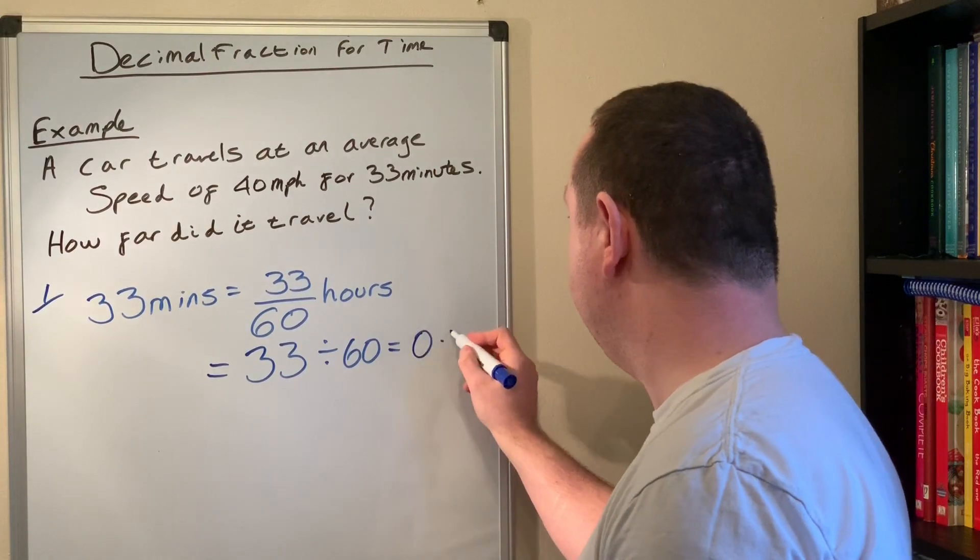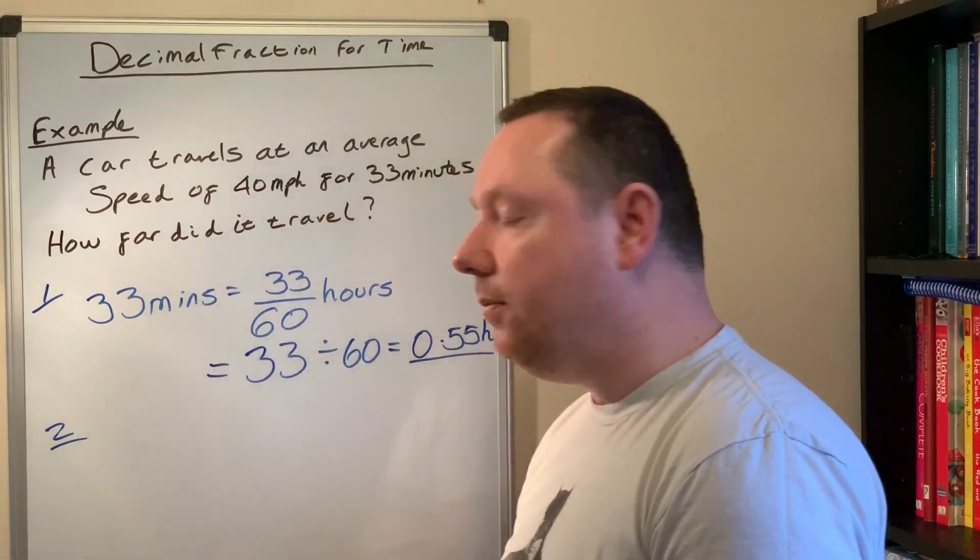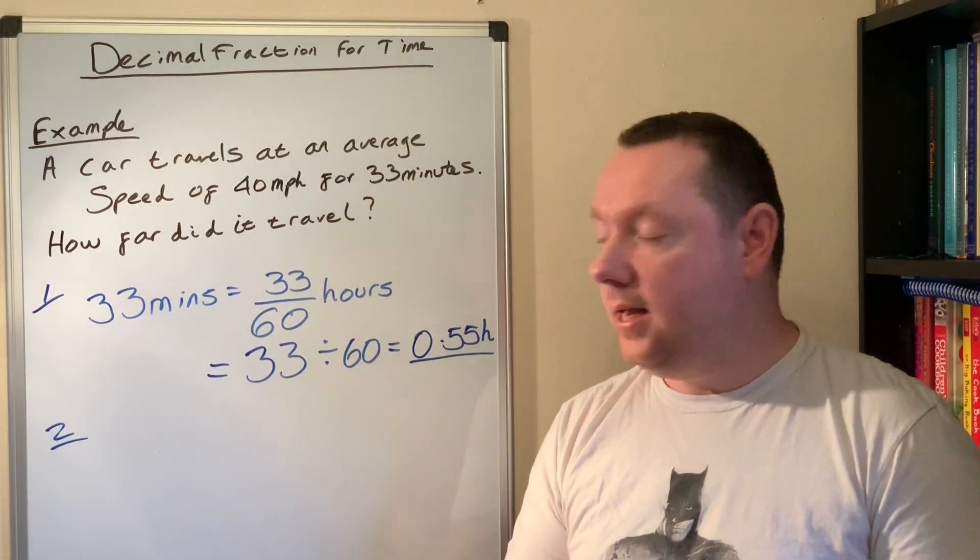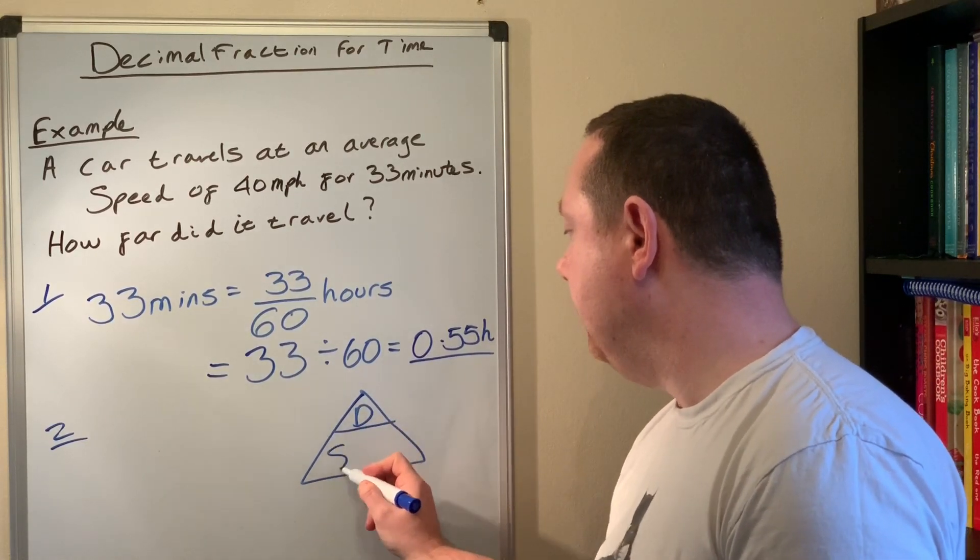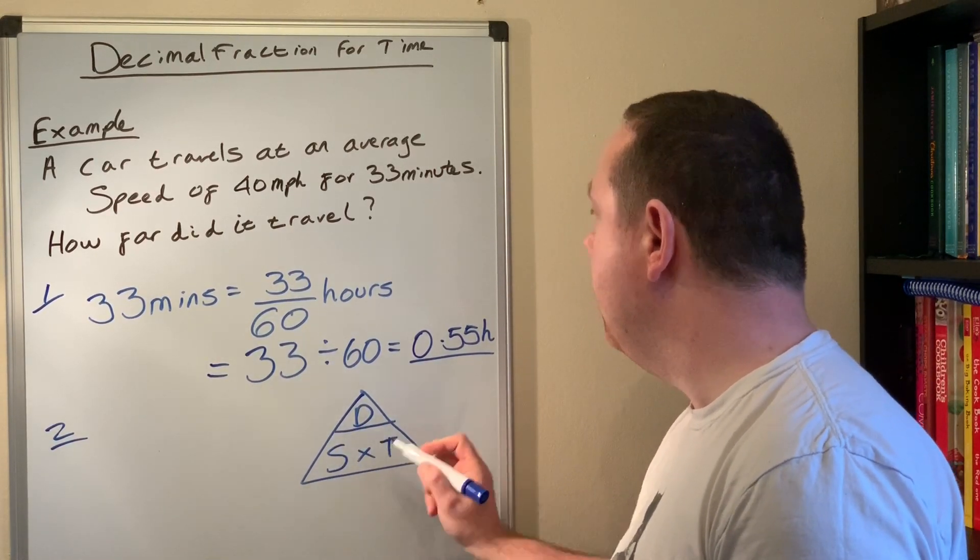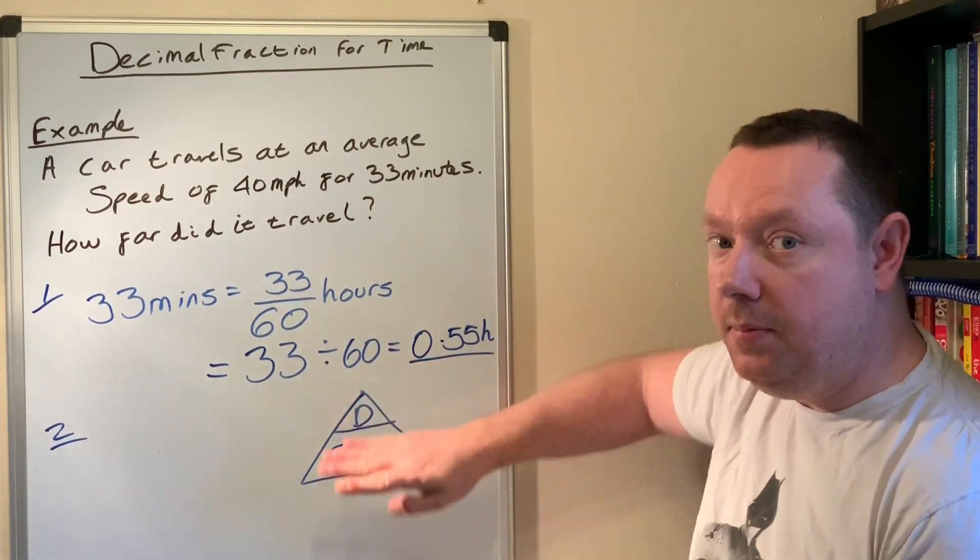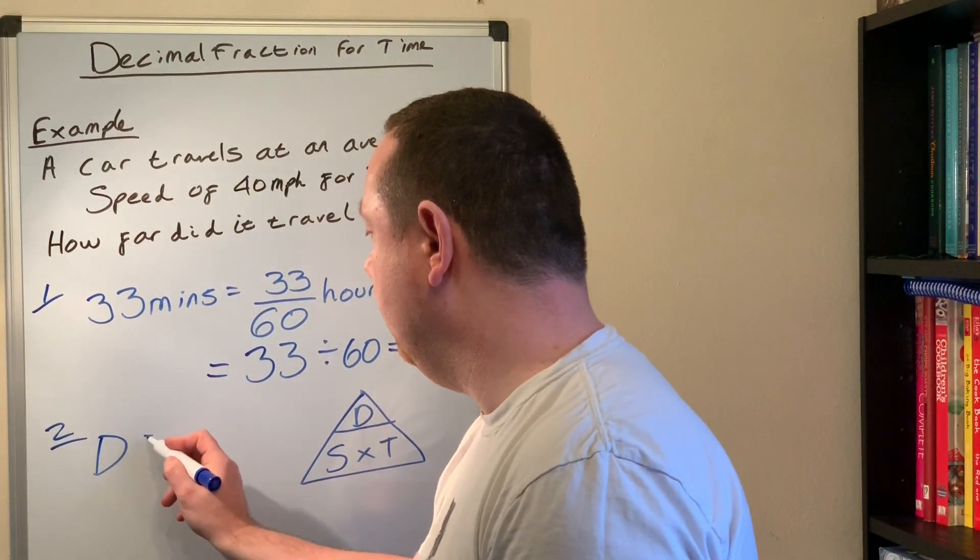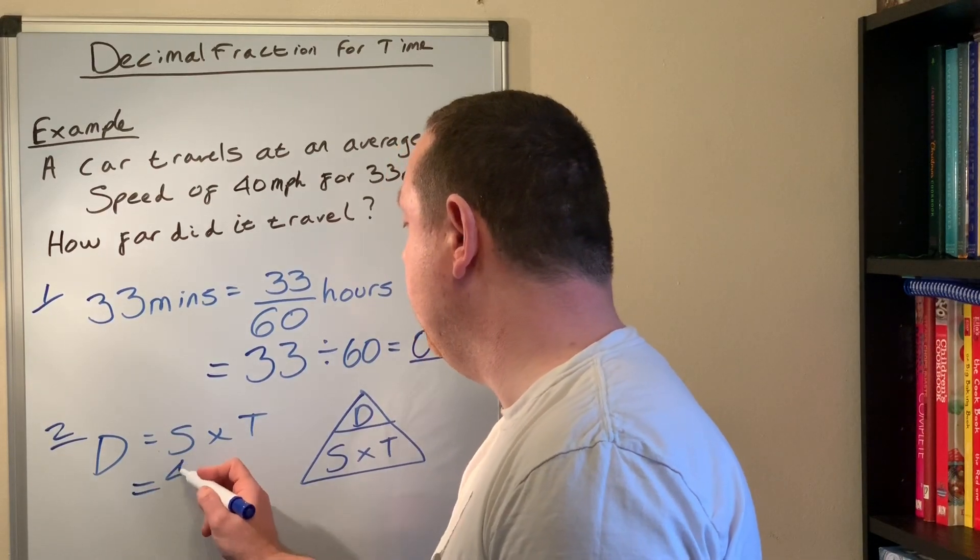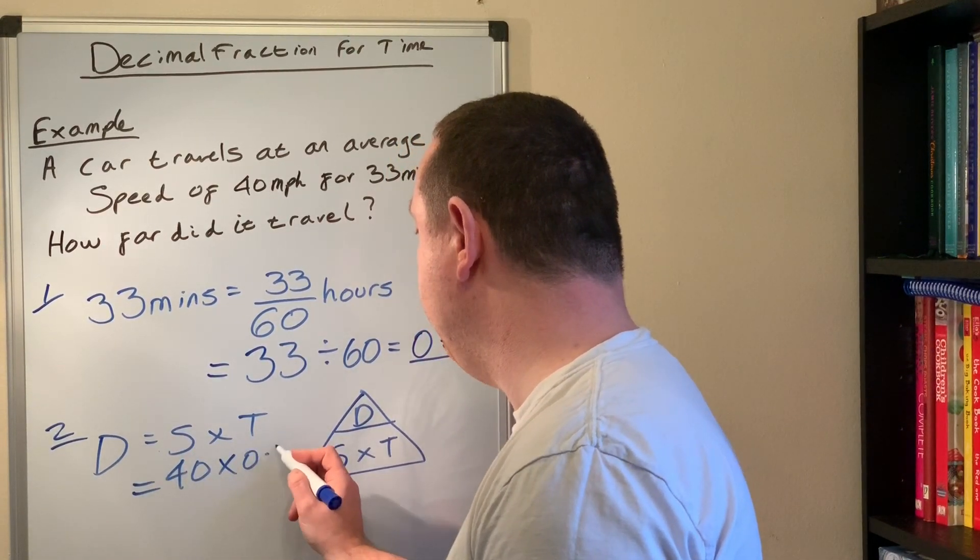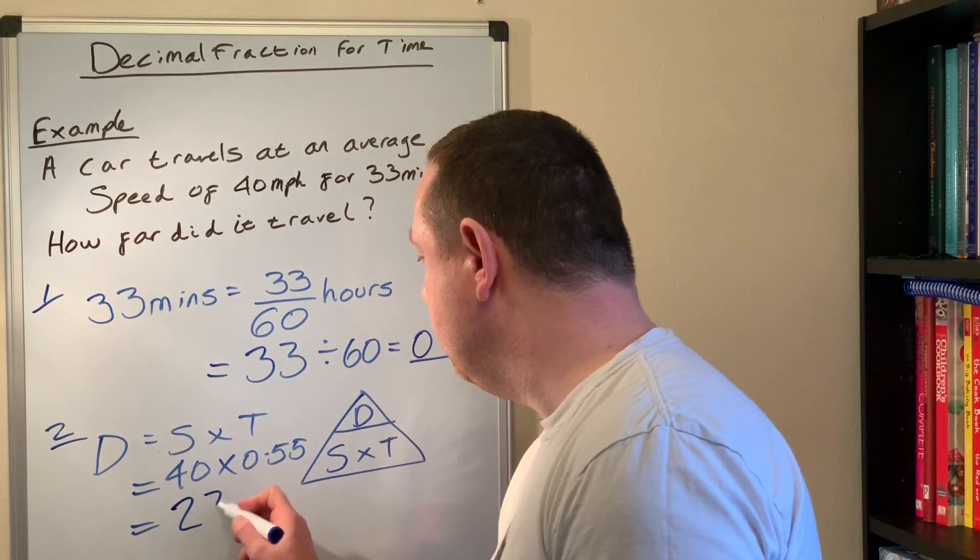So step two, we use a speed distance time triangle. We need a triangle: distance on the top over speed times time. I'm trying to work out how far I traveled, so I cover distance up and it says do speed times time. So I write down my formula: distance equals speed times time. Speed is 40, the time is 0.55, which gives us 22 miles.